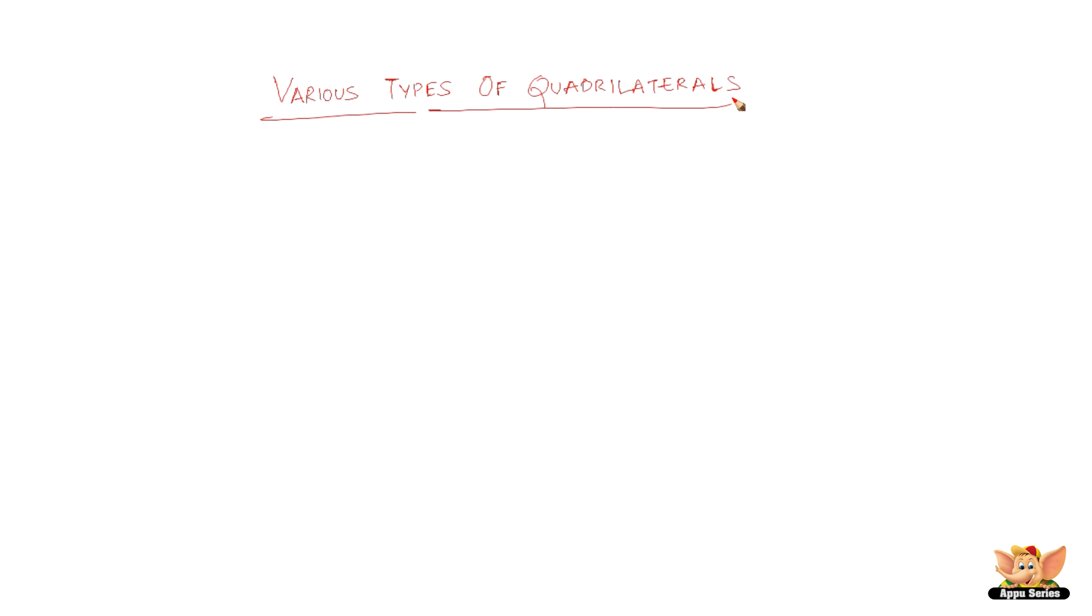So here again, let us see more various types of quadrilaterals. We are going to discuss about a quadrilateral called a rhombus.